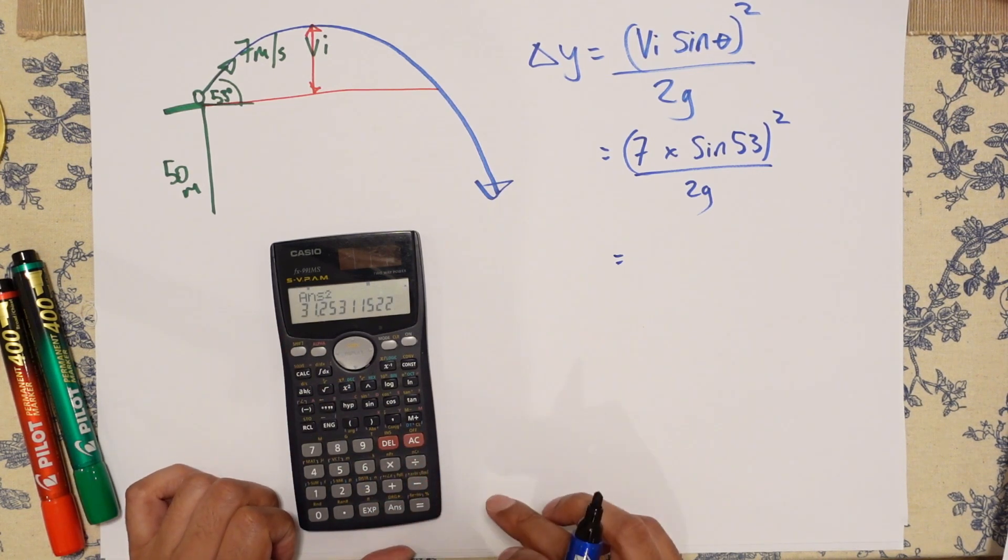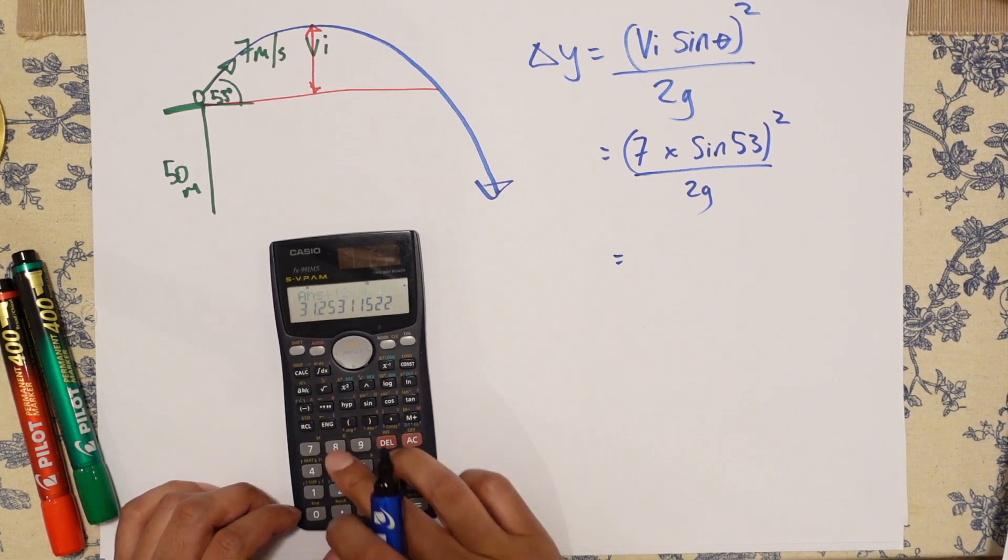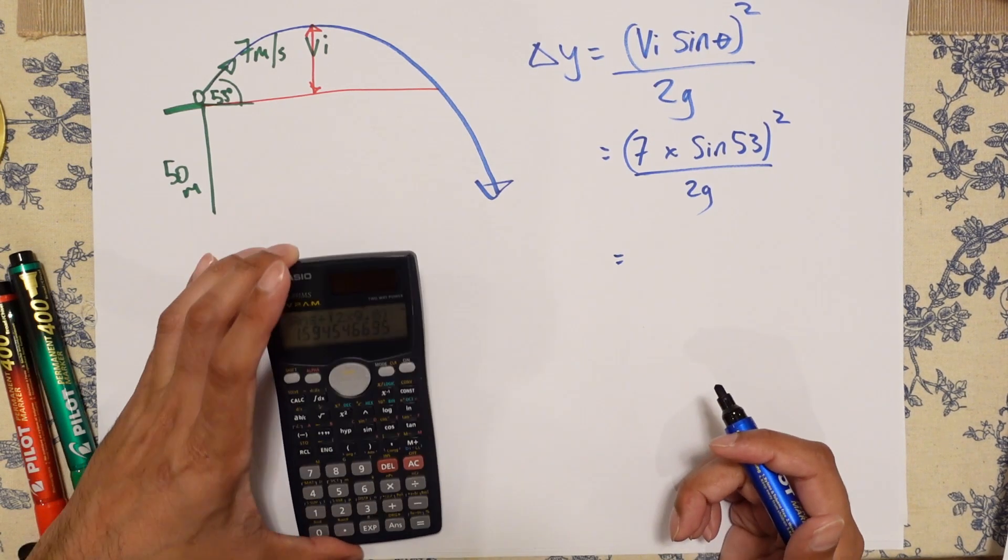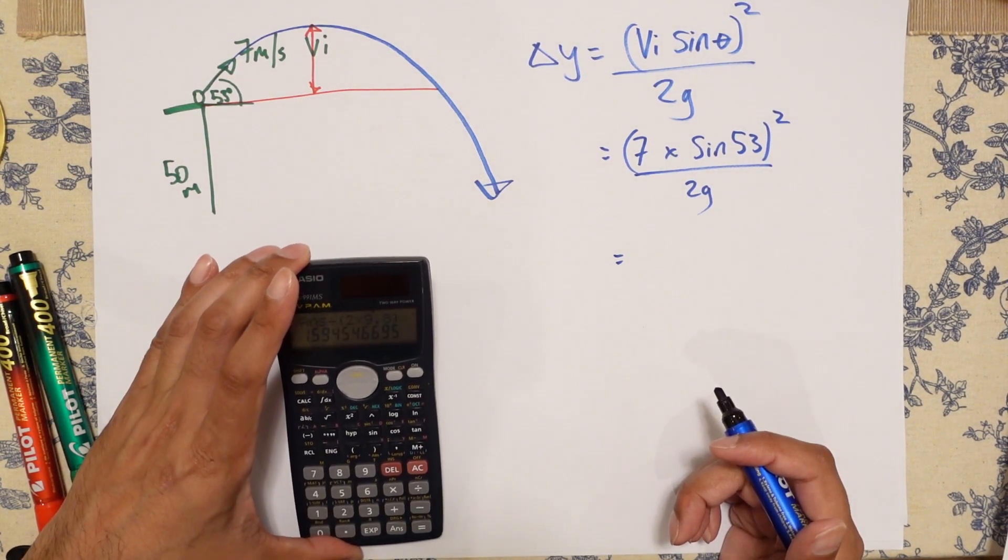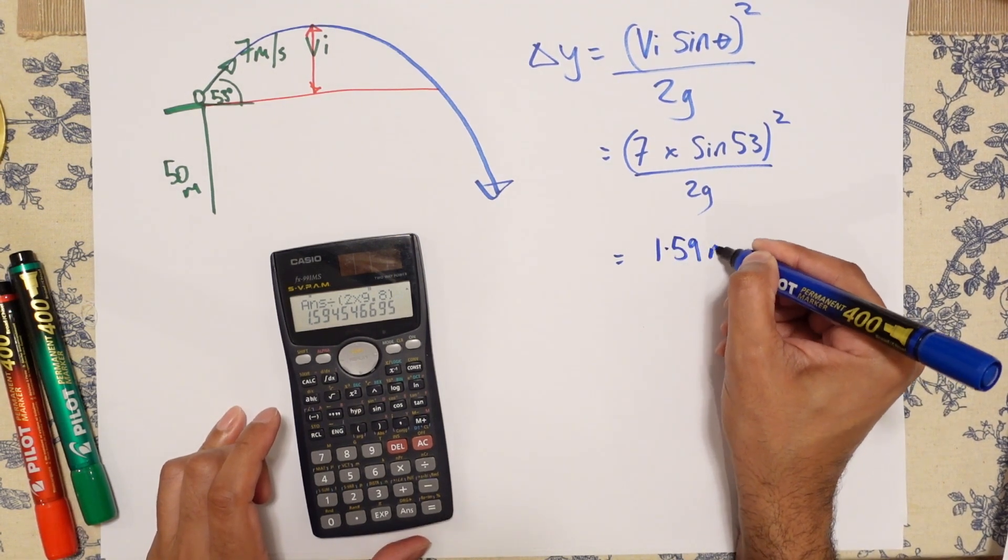So 7 times sine 53 equals that. Square that divided by 2 times 9.8. Close that bracket.